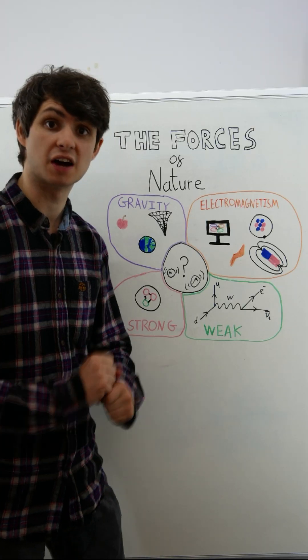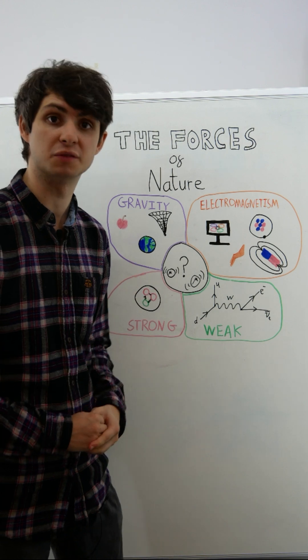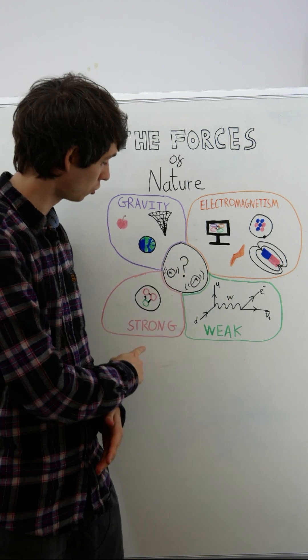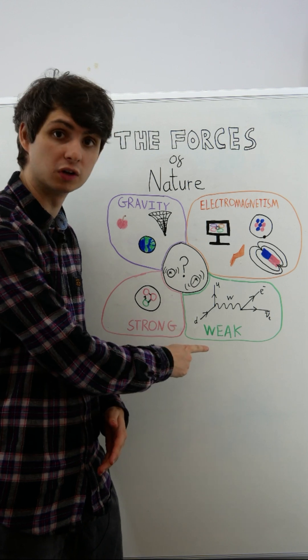What are the forces that govern the natural world? The natural world is governed by four distinct fundamental forces: gravity, electromagnetism, the strong nuclear force, and the weak nuclear force.